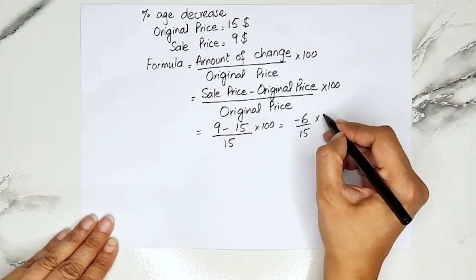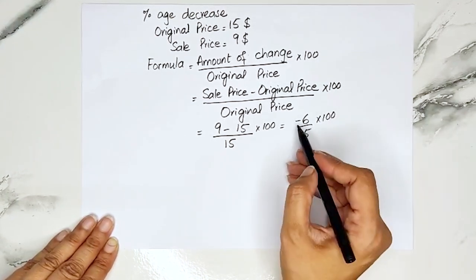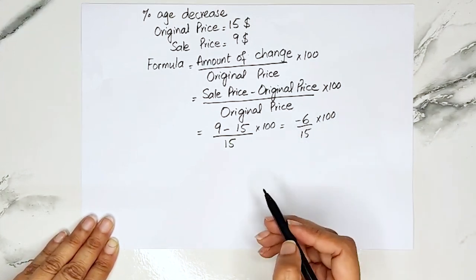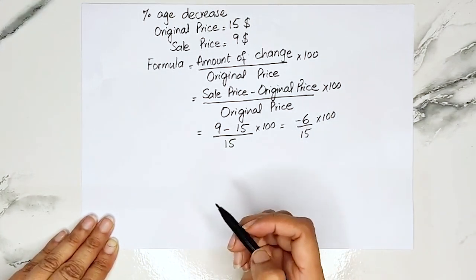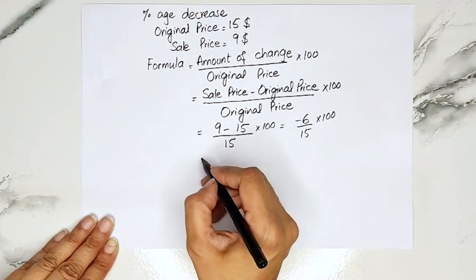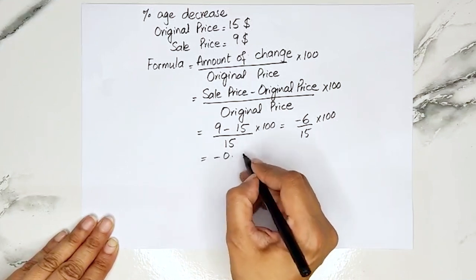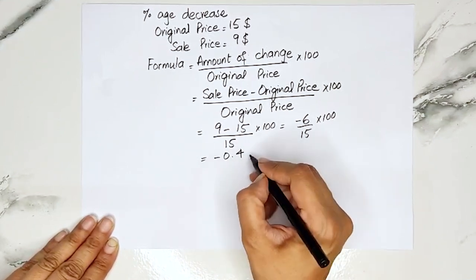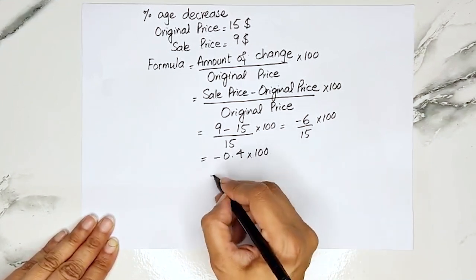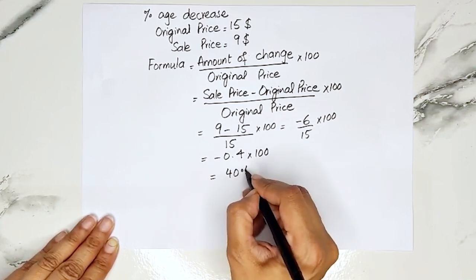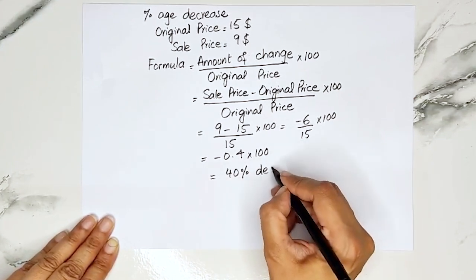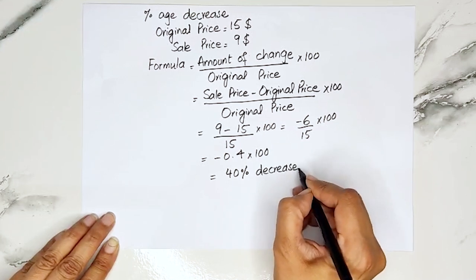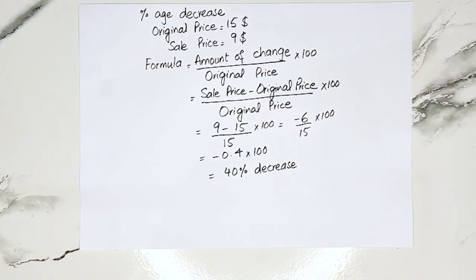9 minus 15 is minus 6, divided by 15, multiplied by 100. Remember: a minus sign always shows a decrease or a loss. So minus 6 divided by 15 is minus 0.4, multiplied by 100, and that will be 40% decrease. This is how we can calculate the percentage decrease using the formula method.